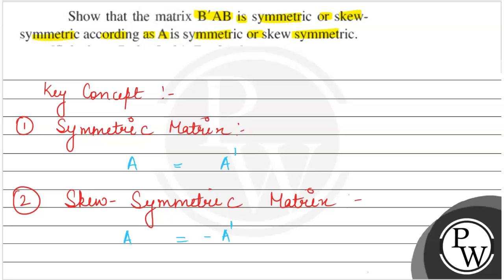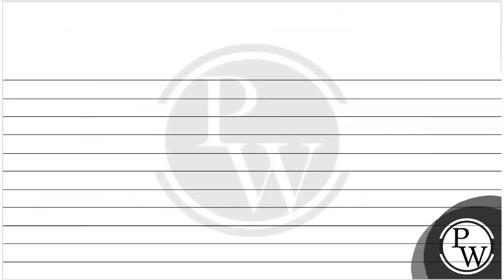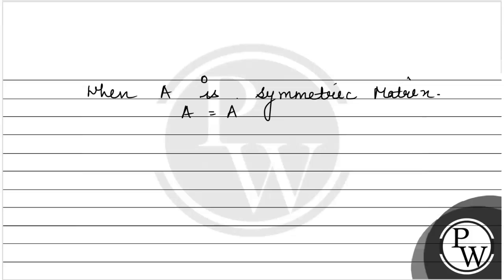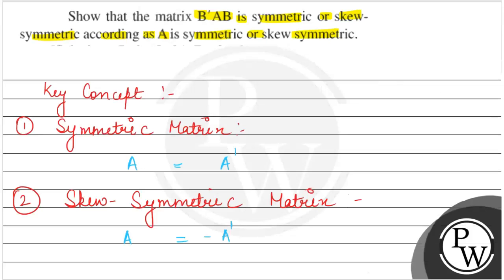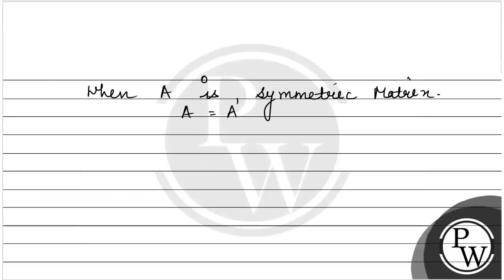Now, coming to the question. The question asks us to prove that if A is symmetric, then B'AB is symmetric. And if A is skew-symmetric, then B'AB is skew-symmetric. The first condition given is when A is a symmetric matrix. If A is symmetric, that means A equals A transpose. We need to prove that B'AB is also symmetric.